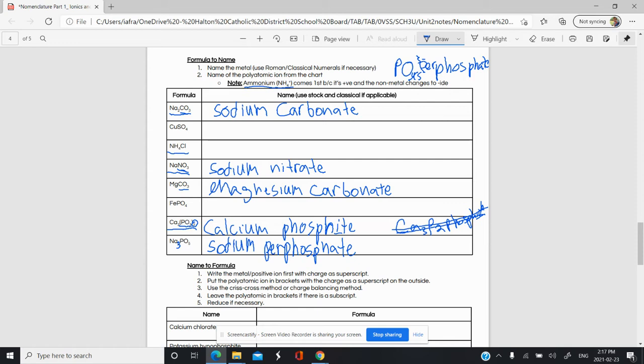It's ammonium. Our polyatomic ion is positive in this case, so it comes first. Then we name our non-metal by changing the ending to -ide. So this is ammonium, not ammonia. Ammonia is the compound NH3. This is ammonium chloride.